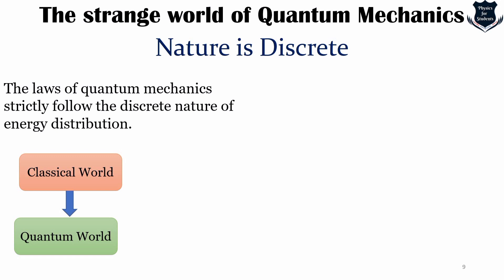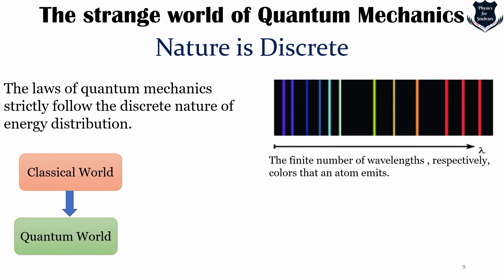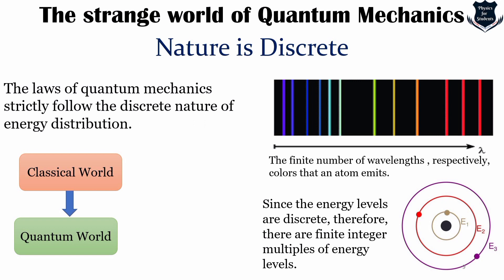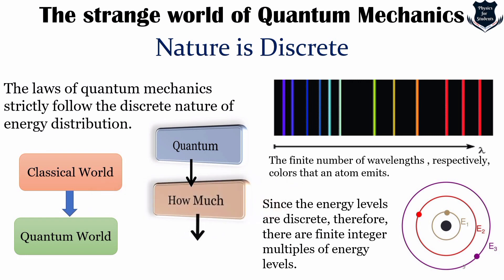The finite number of wavelengths also shows the colors that an atom emits. In the typical Bohr model, the energy levels are finite integers and multiples of energy levels — because nature is discrete. The energy levels where electrons of subatomic particles are moving are also finite integers — very discrete. So the first strange thing that defies common sense is nature being discrete, which was developed later by Max Planck and other physicists.